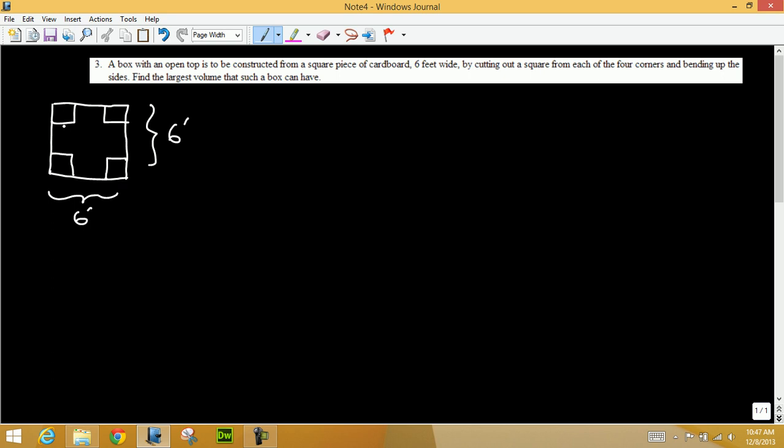So cut out a square from each of these four corners. Let's say that's X, and then this will be X also. So that's X, X, X, and if we bend up these sides we get a box with an open top.